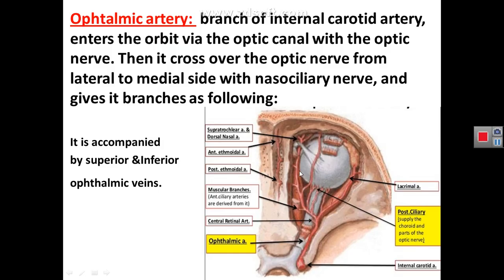Regarding blood supply to the orbit: the ophthalmic artery, a branch of the internal carotid artery, enters the orbit through the optic canal with the optic nerve. The ophthalmic artery crosses above the optic nerve from lateral to medial with the nasociliary nerve, giving many branches as named in the figure. The ophthalmic artery is accompanied by superior and inferior ophthalmic veins.